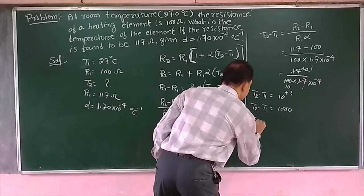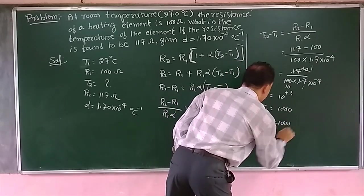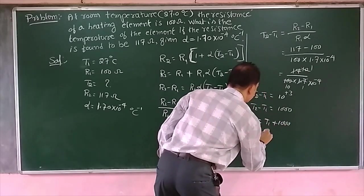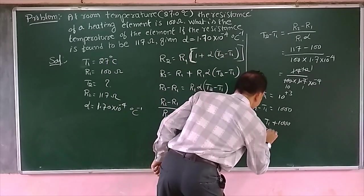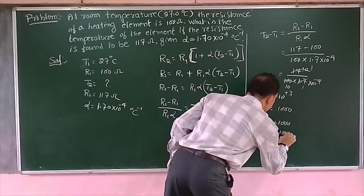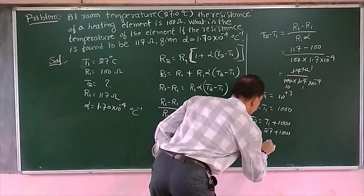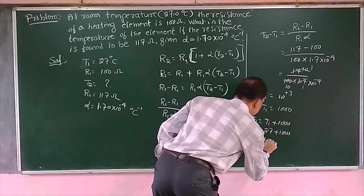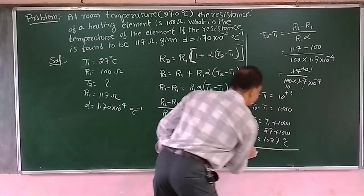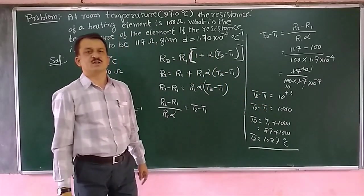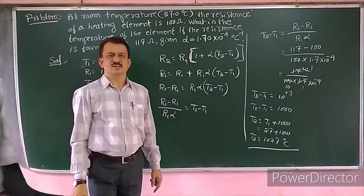Therefore T2 equals T1 plus 1000 equals 27 plus 1000. Therefore T2 equals 1027 degree Celsius.